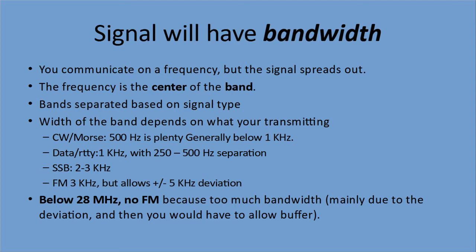The width of the band depends on what we're transmitting. CW or Morse is very efficient — it only needs about 500 Hz. It's actually a range of 100 to 500 Hz, so generally you're well below one kilohertz. There's another form of transmission called RTTY, and you generally allocate one kilohertz for it, with about 250 to 500 Hz of separation.